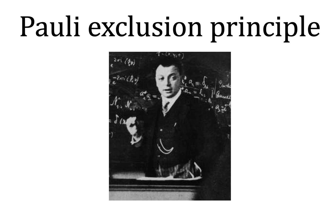The Pauli exclusion principle is the quantum mechanical principle which states that two or more identical fermions, particles with half-integer spin, cannot occupy the same quantum state within a quantum system simultaneously. This principle was formulated by Austrian physicist Wolfgang Pauli in 1925 for electrons, and later extended to all fermions with his spin-statistics theorem of 1940.